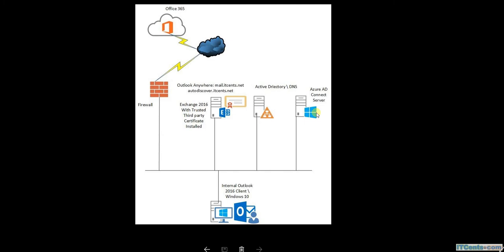Those DNS records need to be added to your public DNS so that client computers can connect to the appropriate Office 365 servers and use those services. This also ensures that when someone sends email to your organization, mail reaches the right destination — Office 365 — and your users can receive it. I will show you how to verify your domain against Office 365, because once you add a domain to your Office 365 account you need to prove you are the owner.